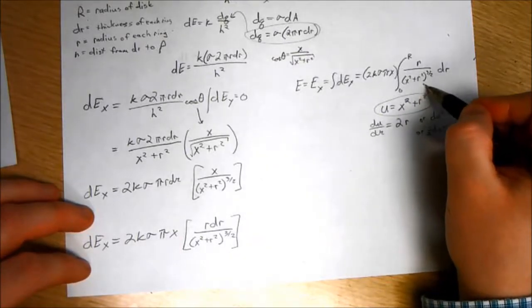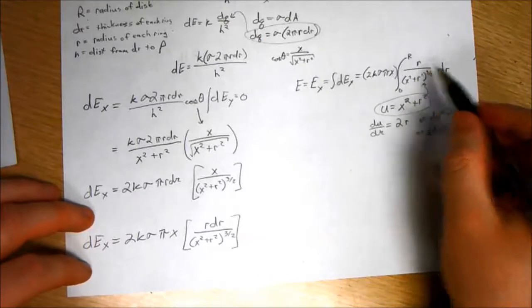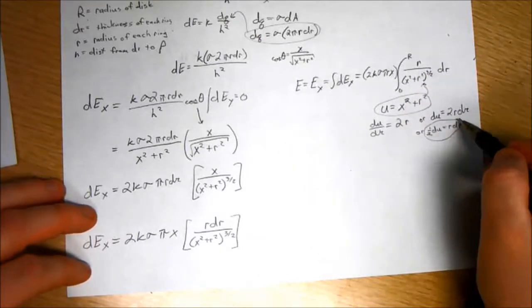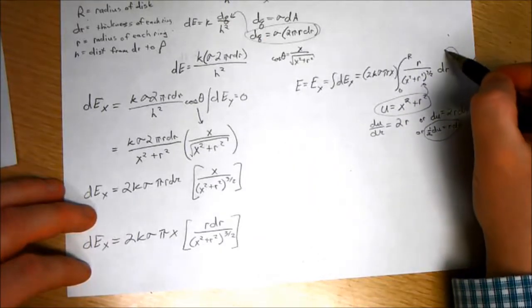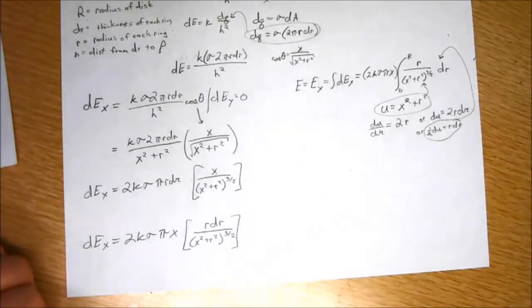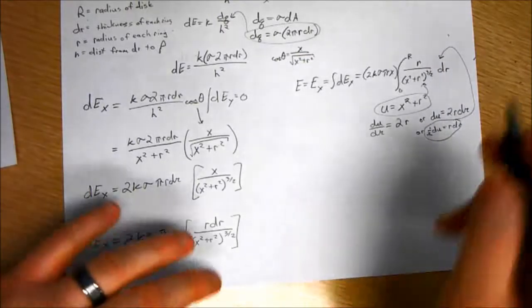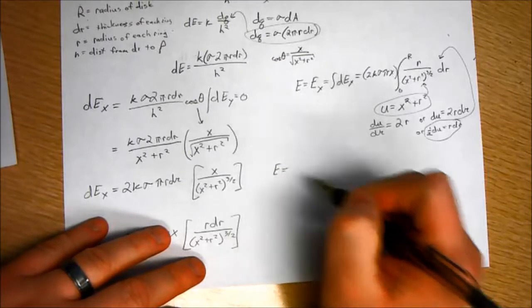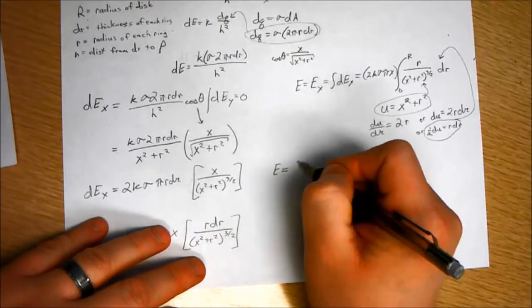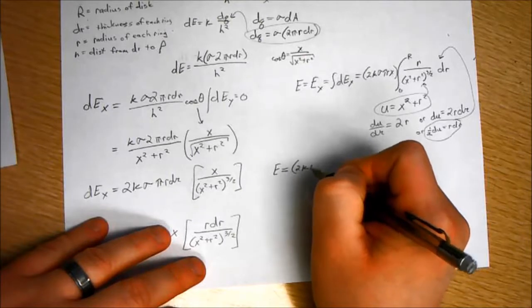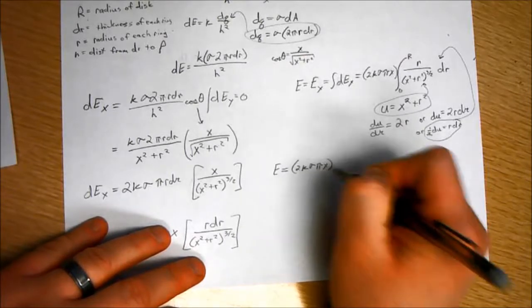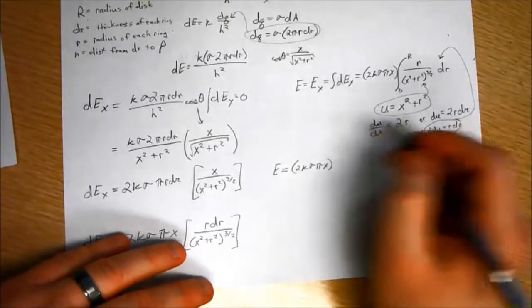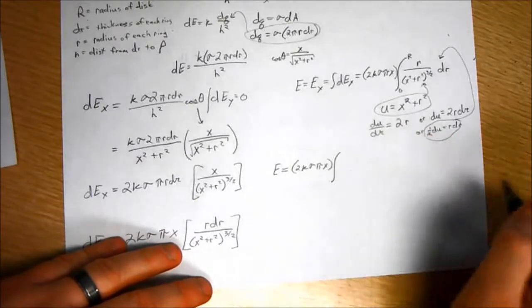So, this can go in here, but then I've still got this R in the numerator that's going to be a problem. Well, I can get rid of it using this. So, E equals 2K sigma pi X times the integral of, remember, U to the negative 3 halves. I'm going to go ahead and put this in the negative 3 halves. I find it easier to think of integrals that way.